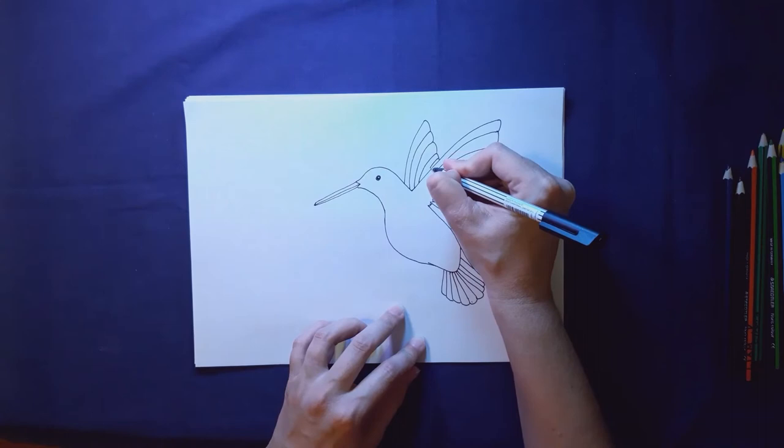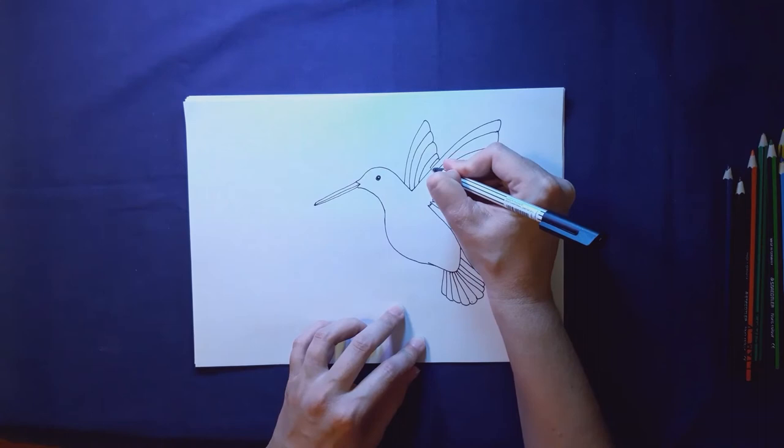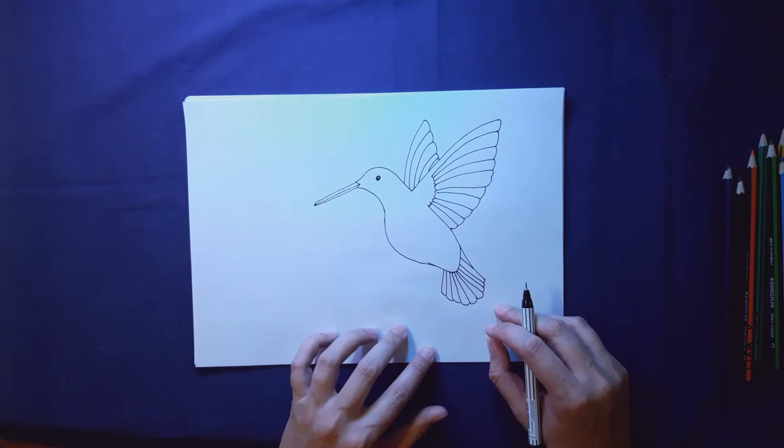All right, so we have got some of my feather details. All right, I've got a few more details to add on him and then we're going to draw his flower.